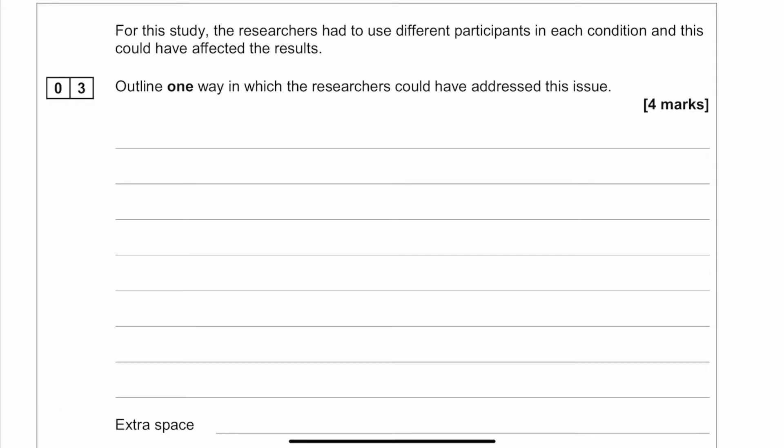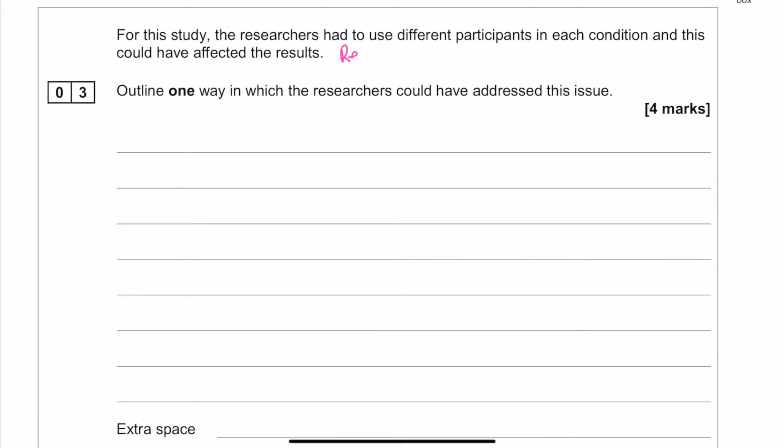So the next question is a full marker on controlling variables. If you cut through the question, what you are effectively being asked is how to deal with the participant variables that could potentially come out of an independent groups design. The simplest way to do that is to use random allocation for the groups, and your four marks comes from explaining how that can be done like this.